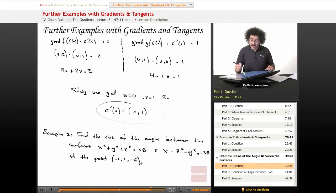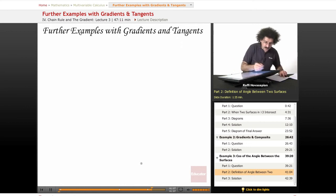So find the cosine of the angle between the surfaces x squared plus y squared plus z squared equals 38 and x minus z squared minus y squared equals minus 38 at the point (-1, 1, -6). At that point, the two curves hit each other. We want to find the angle that the two surfaces make with each other. So this is a good time to give a quick definition of what we mean by the angle between two surfaces.